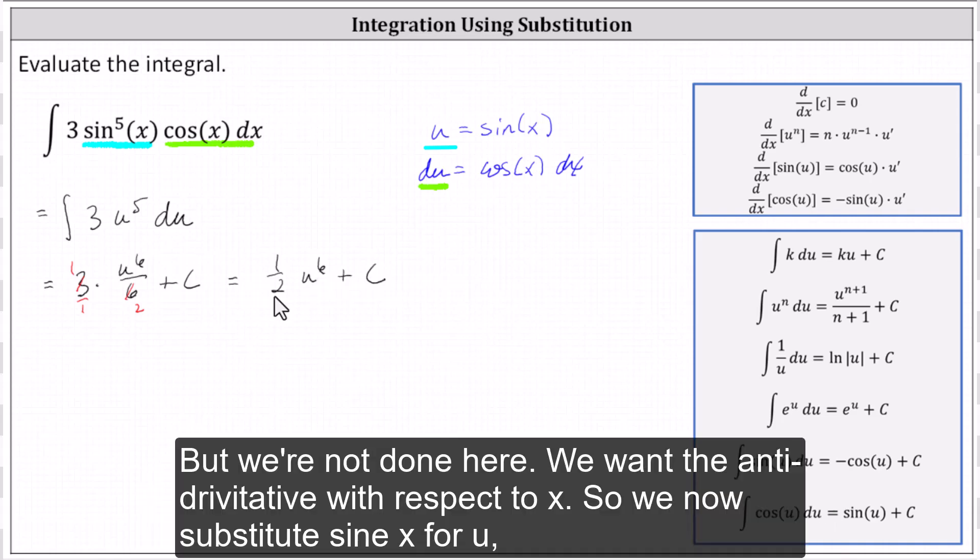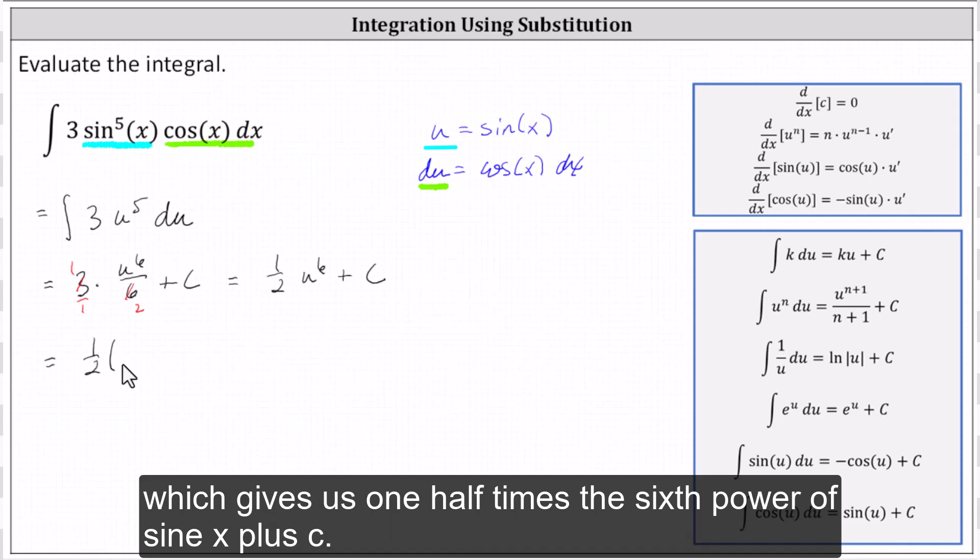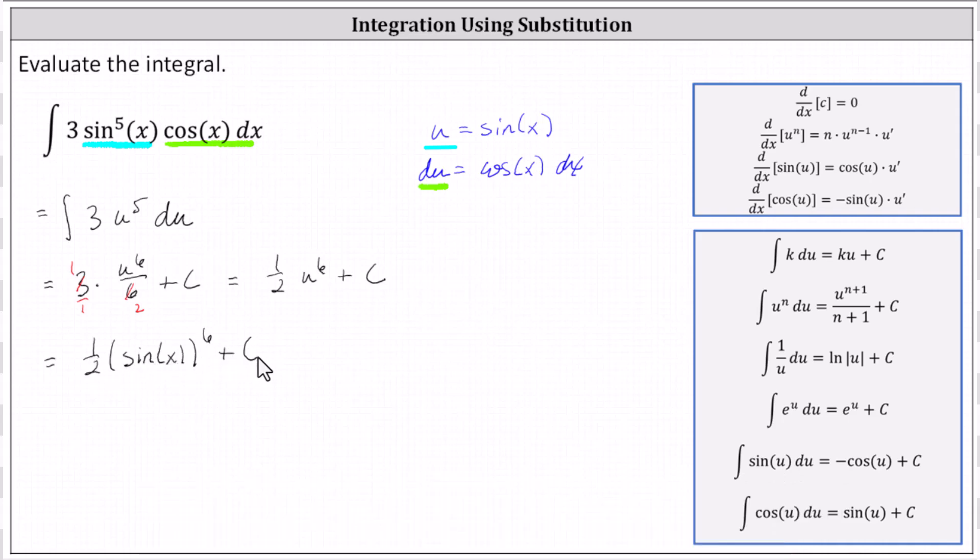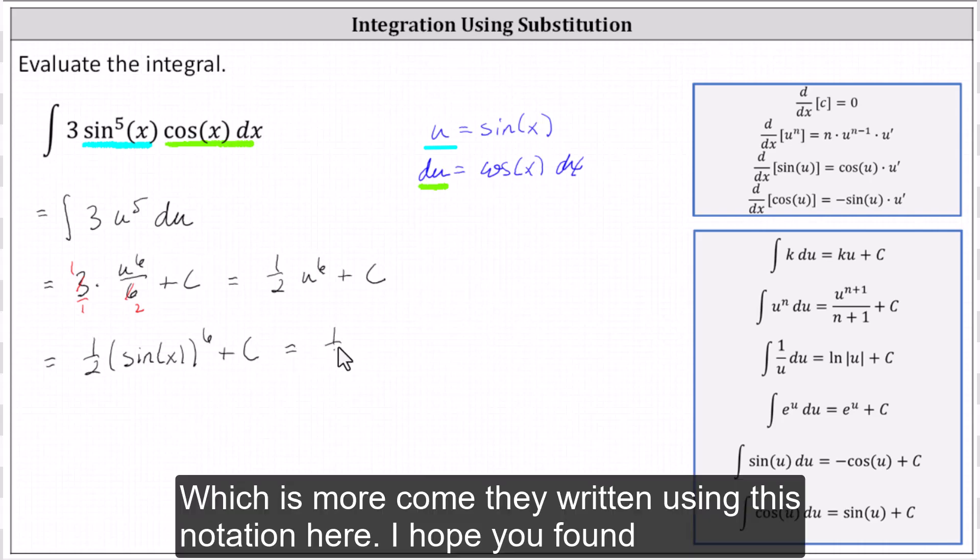But we're not done here. We want the antiderivative with respect to x. So we now substitute sine x for u, which gives us one half times the sixth power of sine x plus c, which is more commonly written using this notation here.